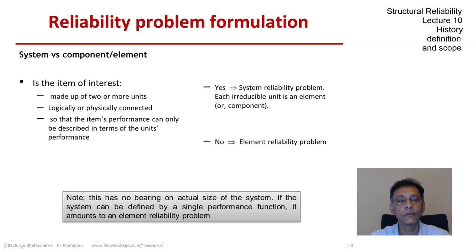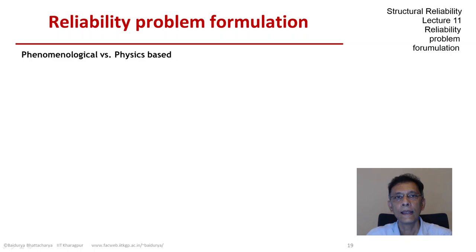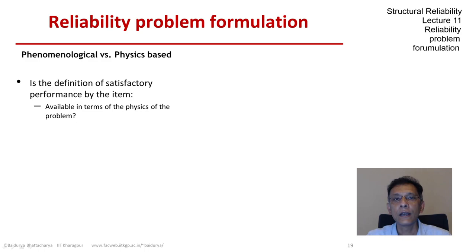But if I need to have two or more performance functions, two or more logically or physically connected units, then I have a system reliability problem. The next question is whether I have a phenomenological or a physics-based problem in hand. So let us approach this step by step. Is the definition of satisfactory performance, the functional objective of the item, available in terms of the underlying physics or the mechanics of the problem?